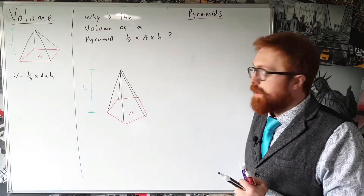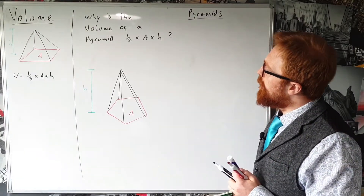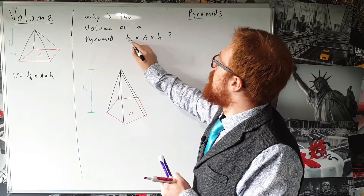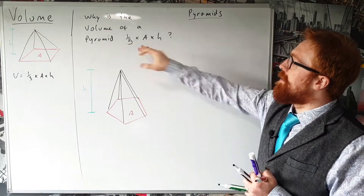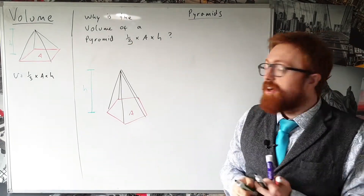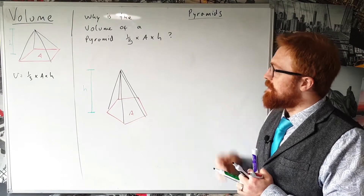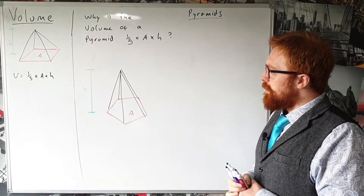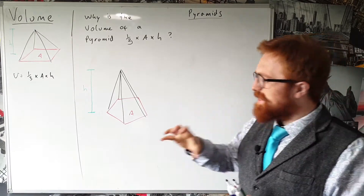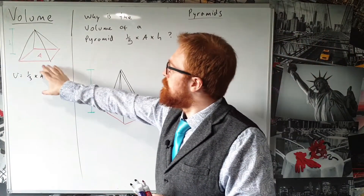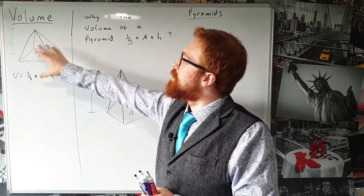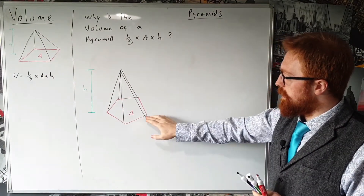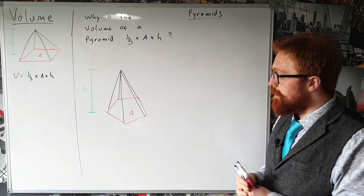In this video we're going to look at a slightly more rigorous proof of why the volume of a pyramid is a third times the area of the base times the height. You might have seen a slightly less satisfying intuitive demonstration showing that it's a sixth of a cube, but in this case we're going to prove it a little bit more rigorously.